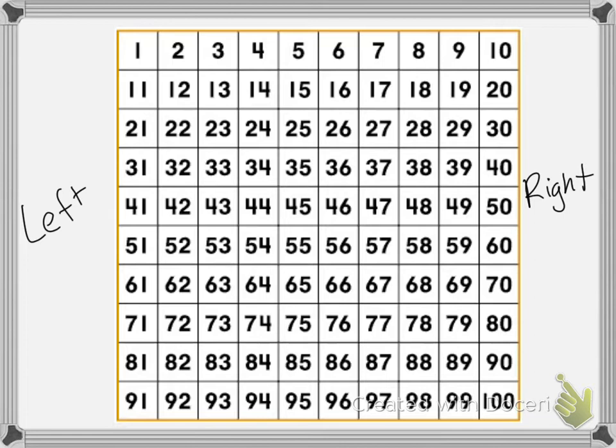Let's find the number 52. I go to the row that has the fives, and we find 52. What number is just above 52? Above means we go up, so the number above 52 is 42.